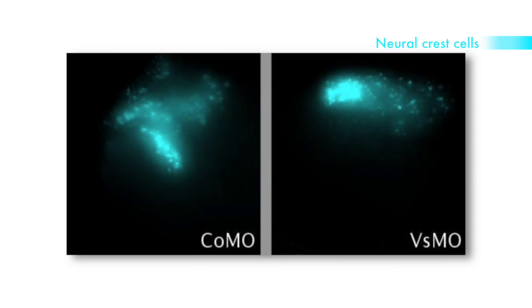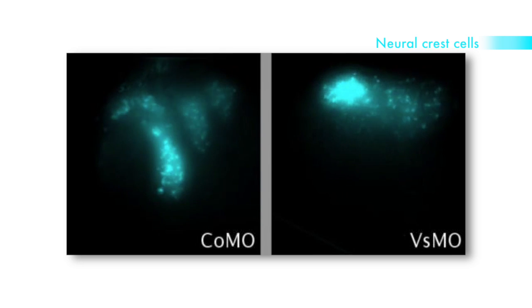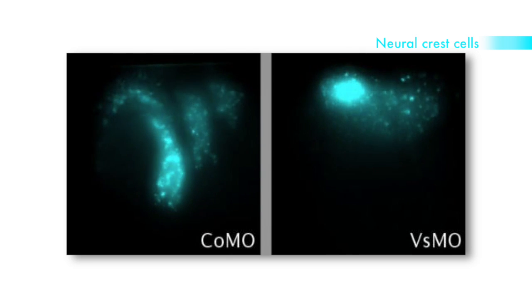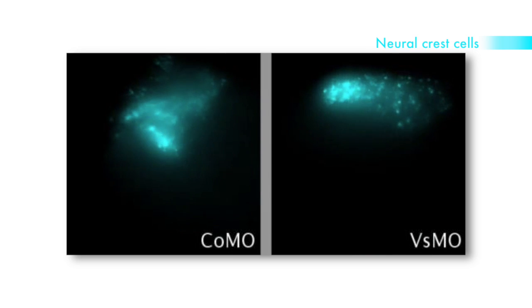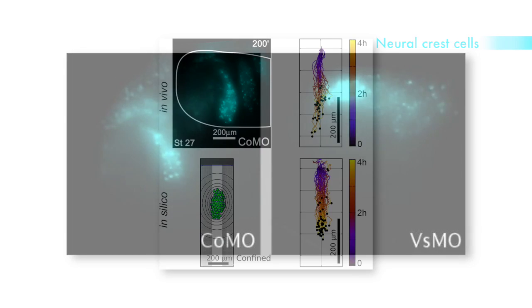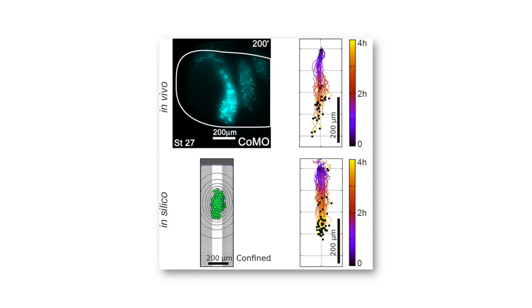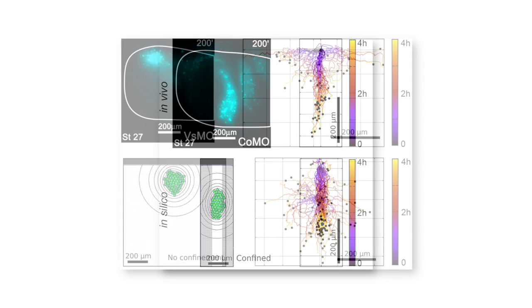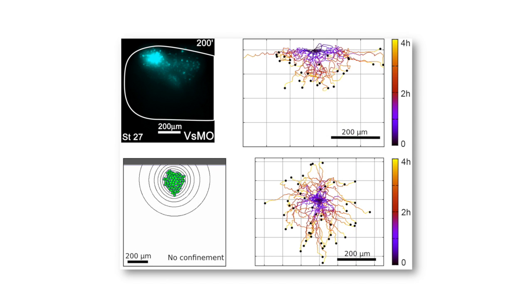So we compared that with the in vivo data by doing time-lapse movies of embryos in which the neural crest were fluorescently labeled, and the data fit perfectly. So in the control case, you have a very directional migration. But when we removed the Versican in vivo, the directionality was very much reduced in the same way in which the in silico reproduced the migration without confinement. So in other words, confinement in silico is equivalent to the presence of Versican in vivo.